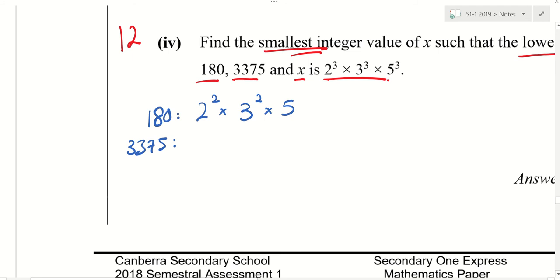Can I have the next one to write out? Can you tell us the factors of 3375? Write it properly. 3 cubed times 5 cubed. That's all, right.